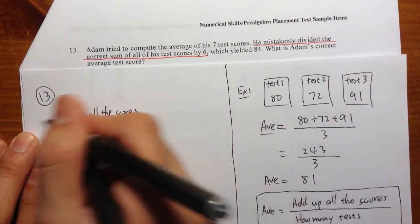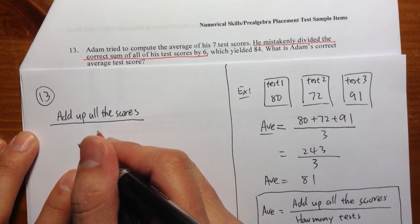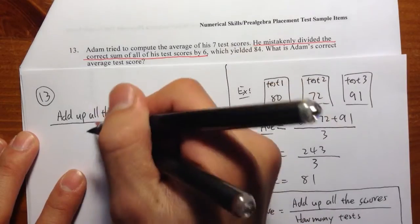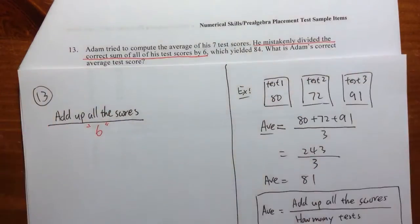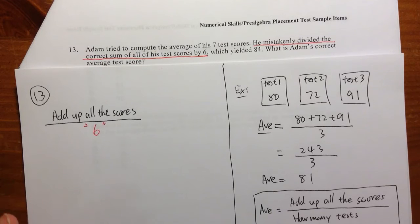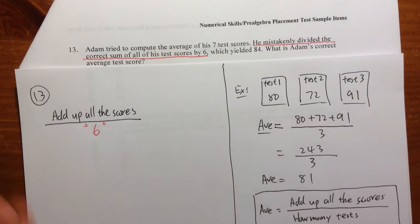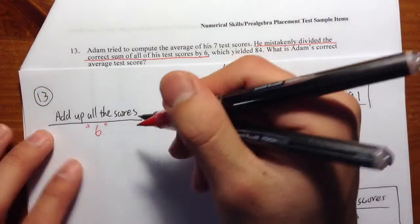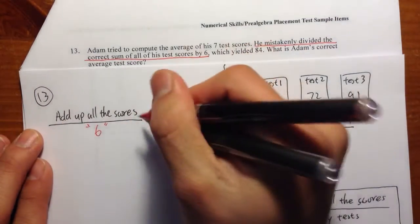So he added all the sums, he added up all the scores. But instead of dividing by 7, he divided by 6. So this is 6. Let me put it in quotation marks because that was incorrect. He should have divided by 7. If he divided by 7 already, then we solved the question already.